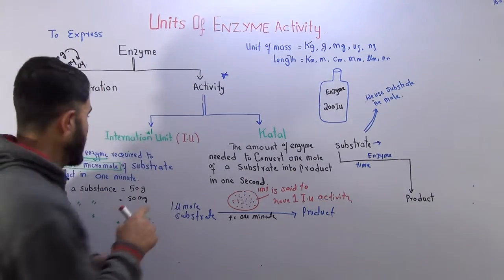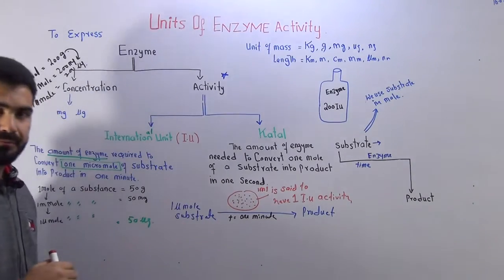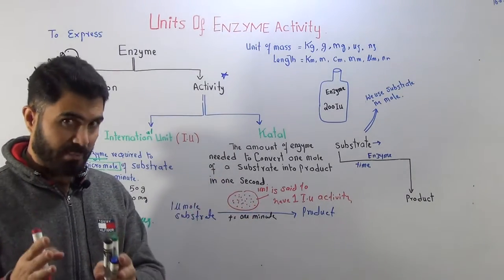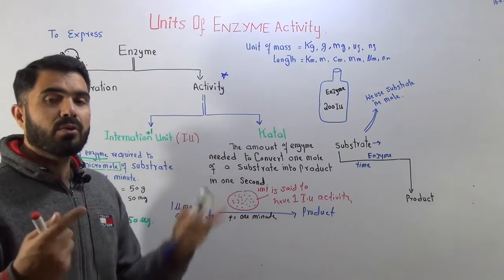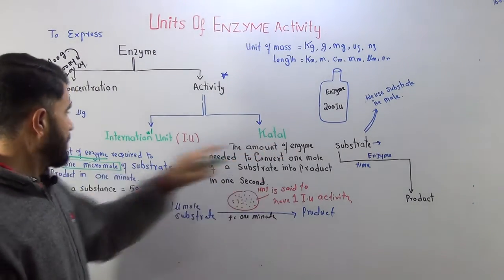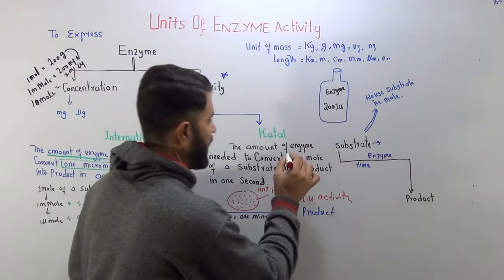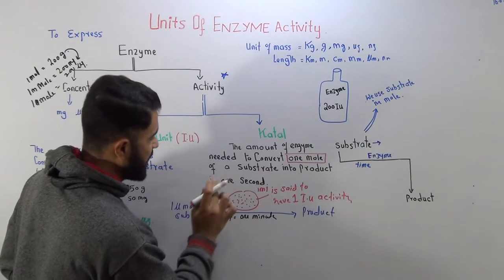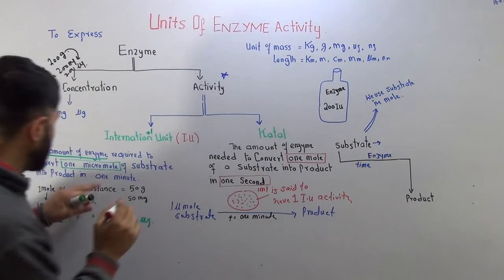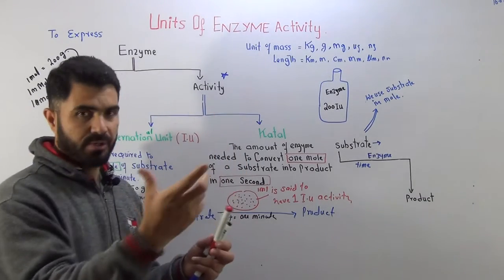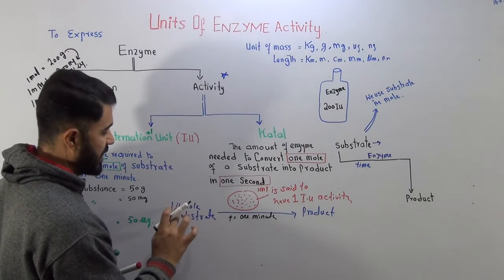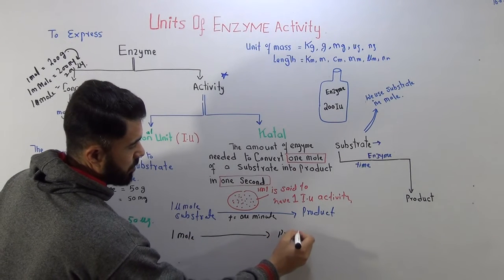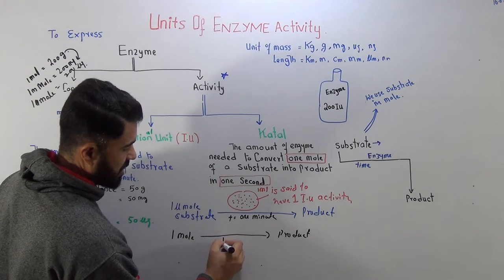Now we come to another unit: katal. There are other units as well like the King-Armstrong unit, but katal and IU are the most famous in our textbooks. Katal is another unit of enzyme activity. Here, the amount of enzyme needed is that which can convert one mole of substrate into product in one second. So compared to IU, the time is one second instead of one minute, and the substrate is one mole instead of one micromole — making it a large unit of enzyme activity.